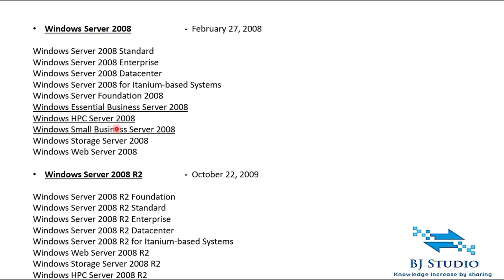Everything has its own features when released, but now we are getting most of it in these three versions. The eighth version is Windows Server 2008 R2, released in October 2009. It has the same set of editions — no difference, but the version has changed.